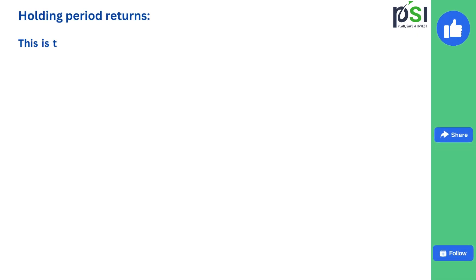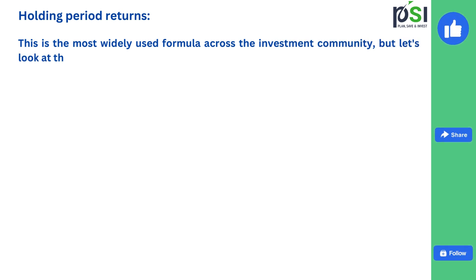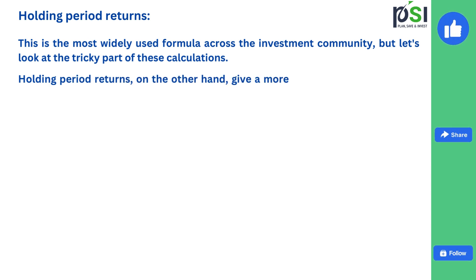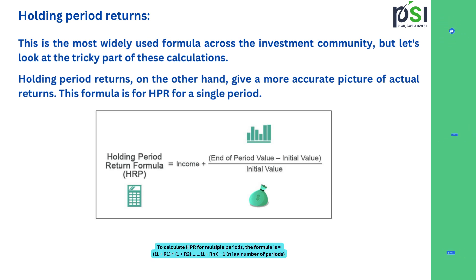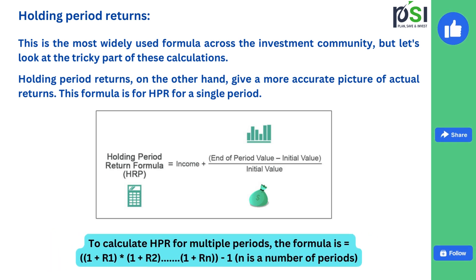Holding period returns is the most widely used formula across the investment community. It gives a more accurate picture of actual returns. The formula is simple: end of period value minus initial value plus income, divided by initial value. This formula is used for a single period. To calculate holding period returns for multiple periods, the formula is: 1 plus R1 multiplied by 1 plus R2, and so on through 1 plus Rn, minus 1, where N is the number of periods.